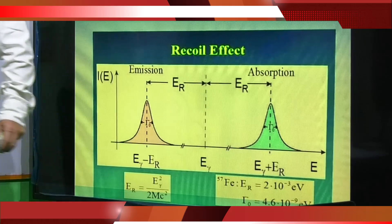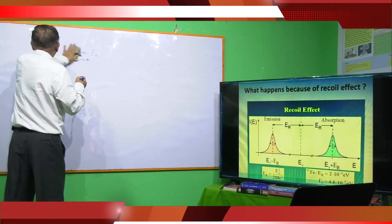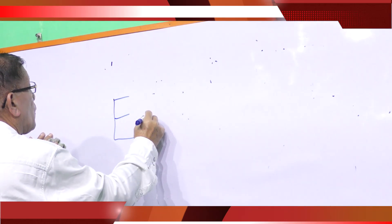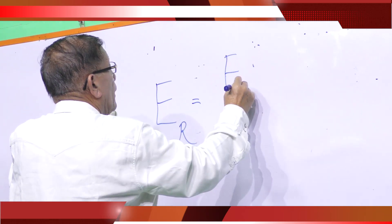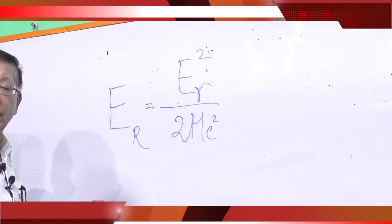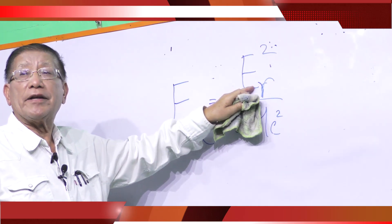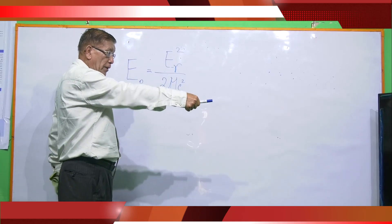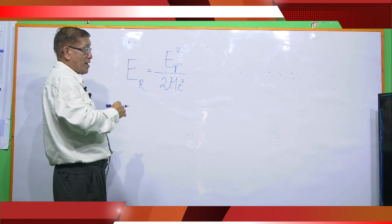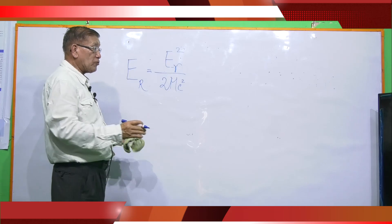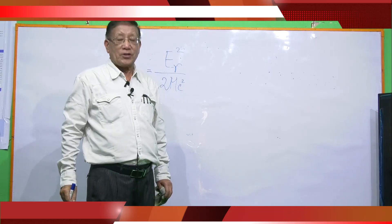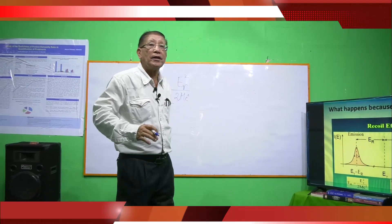The recoil energy E_R equals E-gamma squared divided by 2Mc², where M is the mass of the atom or nucleus and c is the speed of light. In absorption, you again require an additional recoil energy. So the emission and absorption lines are separated by twice E_R. This makes it very difficult to observe resonance, especially in the nuclear case.